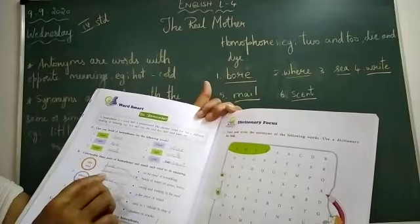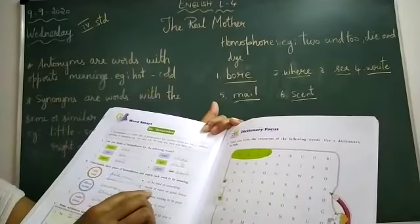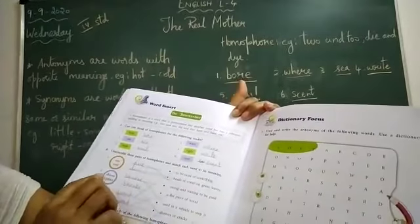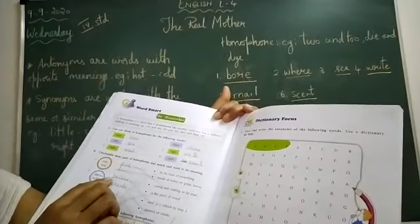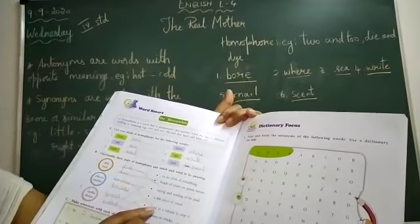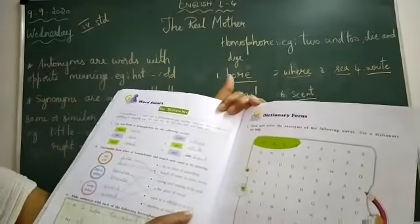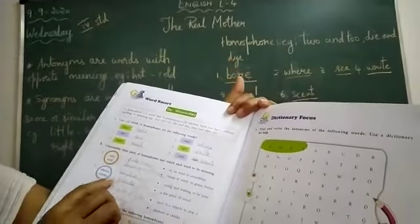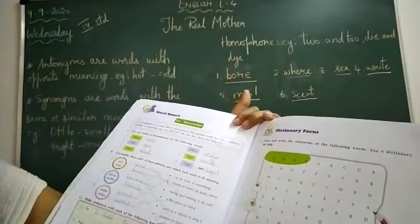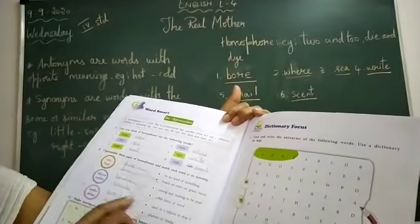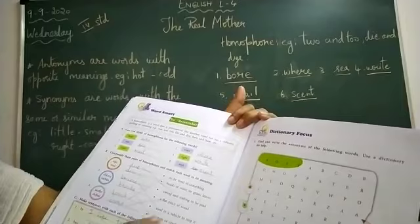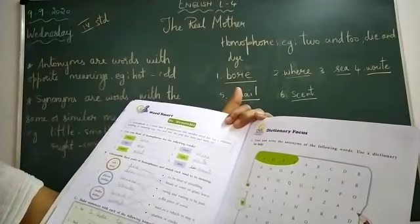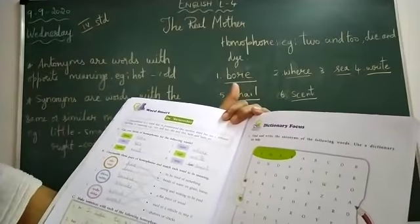The second one is 'dew' — D-E-W — meaning 'beads of water on grass and leaves'. Then 'brakes' — B-R-A-K-E-S — used in a vehicle to stop it. Another homophone is 'breaks', meaning 'to shatter or crack'. By pronouncing them, they sound the same but have different meanings and spellings.